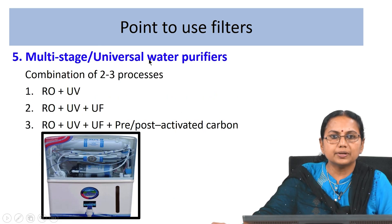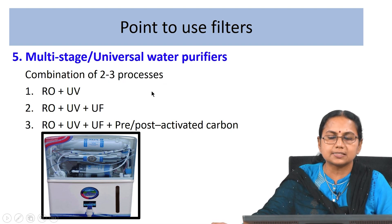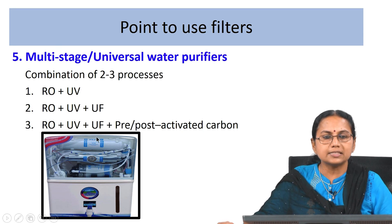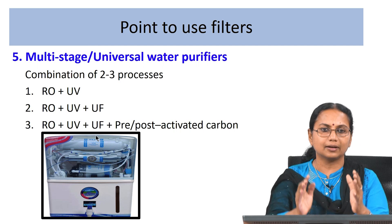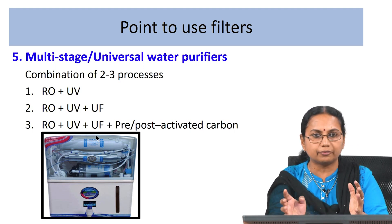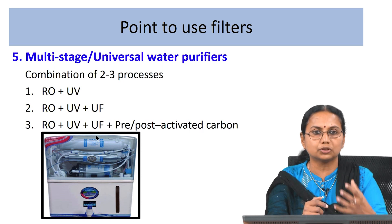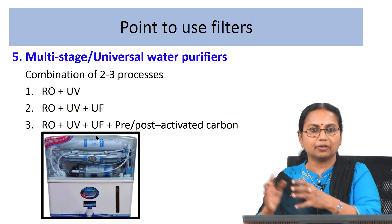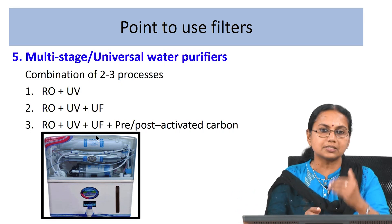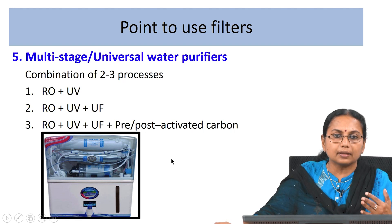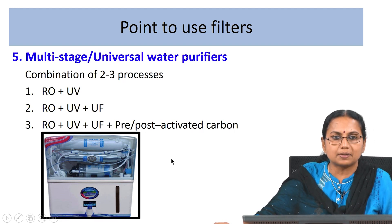Multi-stage universal water purifiers combine two or three processes — options include RO plus UV, RO plus UV plus ultrafiltration, and other combinations. You cannot apply a single treatment system to any type of water; you must look at the raw water quality. Water treatment should be tailor-made because raw water quality varies from one source to another, so the treatment required will be entirely different.